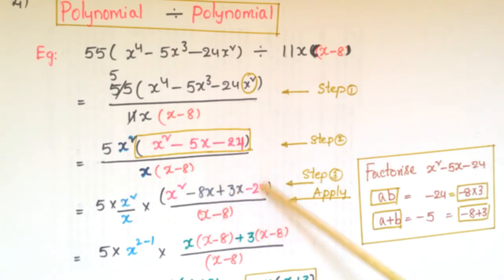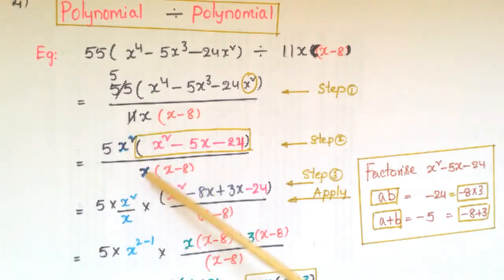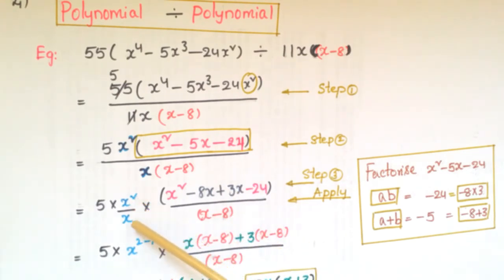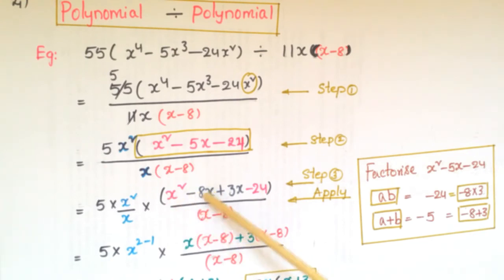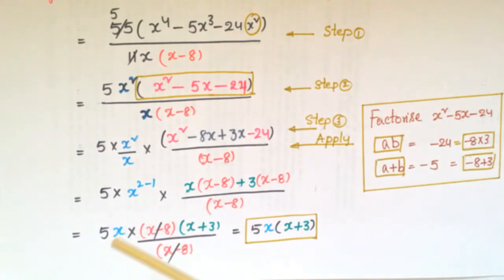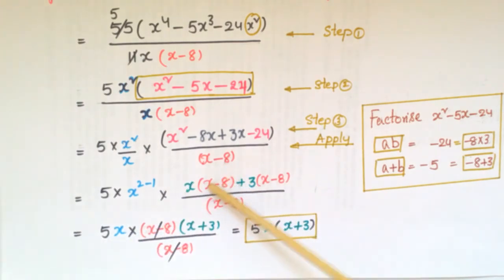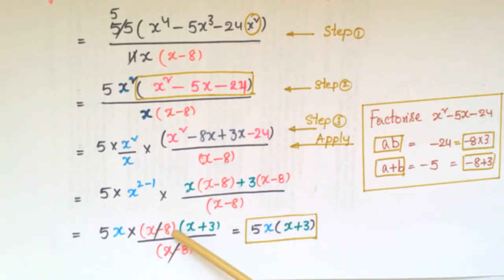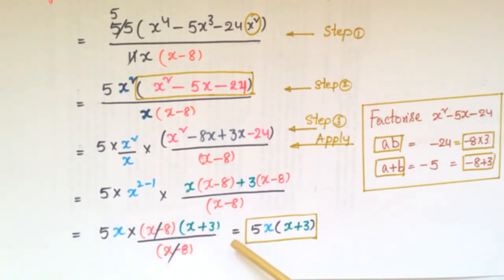So we rewrite −5x as −8x + 3x, giving x² − 8x + 3x − 24. Then x²/x = x, and we factor by grouping: x(x − 8) + 3(x − 8), which gives (x − 8)(x + 3). Canceling (x − 8) from numerator and denominator, the final answer is 5x(x + 3).